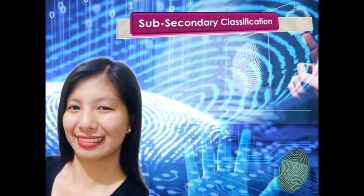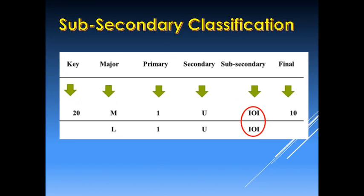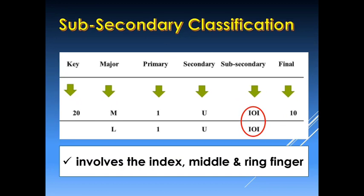Moving on with our Henry classification system, let us now proceed with the sub-secondary classification or division. The sub-secondary classification involves the index, the middle, and the ring finger from both hands. Finger block 2, block 3, and block 4 will be for our numerator, and finger block 7, 8, and 9 will be our denominator.